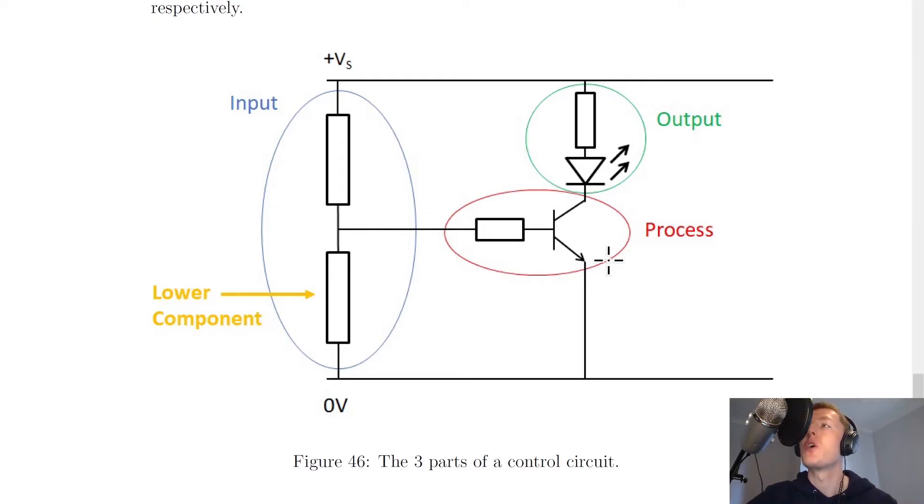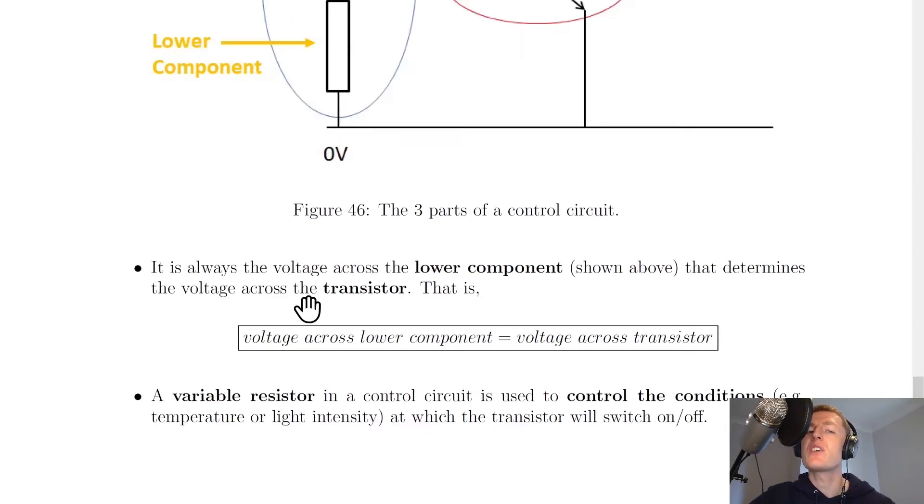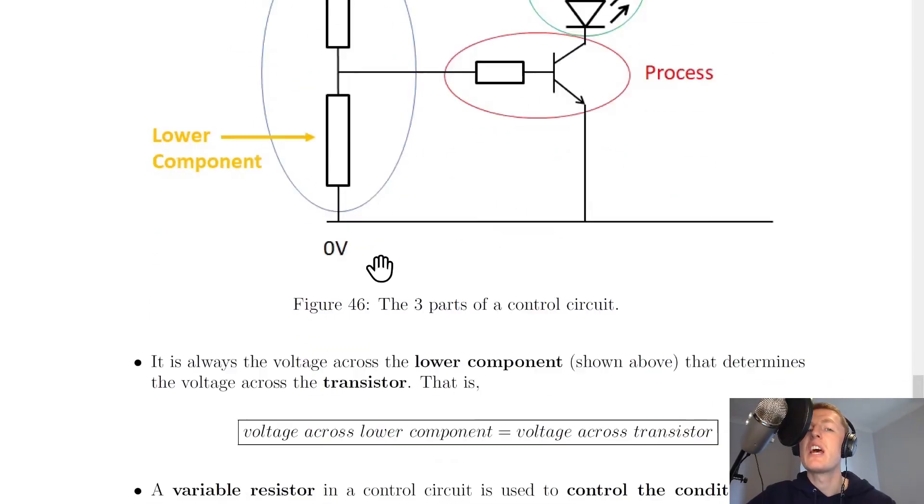Lastly, it's very common for you to see a variable resistor as one of the input components over here on the left-hand side. It could be the upper component or the lower component, but there's a reason for using a variable resistor in these circuits.